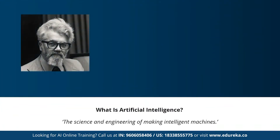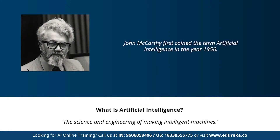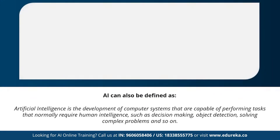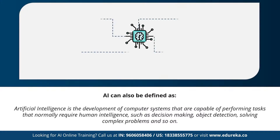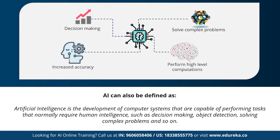The term artificial intelligence was first coined by John McCarthy, who defined AI as the science and engineering of making intelligent machines. In other words, AI can be defined as the development of computer systems capable of performing tasks that require human intelligence, such as decision making, object detection, and solving complex problems. AI helps in decision making, solving complex problems, performing high-level computations, and increasing the accuracy of predictions. These are the main features of AI.